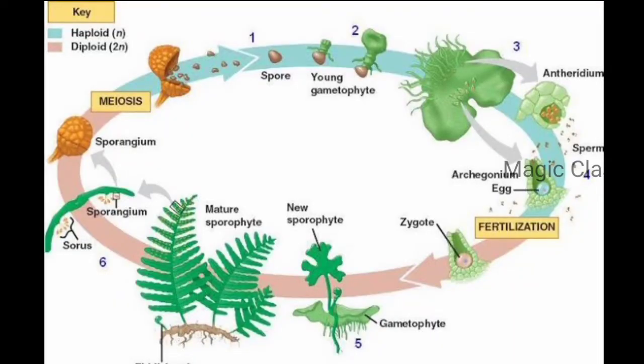Looking at the picture representation: first are the spores forming the young gametophyte. The gametophyte produces male sex organs (anthridium) and female sex organs (archegonium). The sperm swims and fertilizes the egg, forming the zygote. From the zygote, a new sporophyte develops. The mature sporophyte produces a sporangium, which undergoes meiosis to release spores, and the process continues. This is how the alternation of generation in bryophytes takes place.